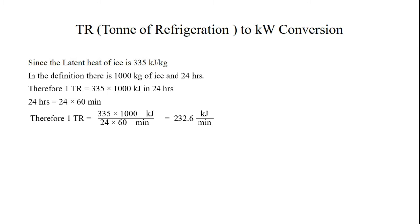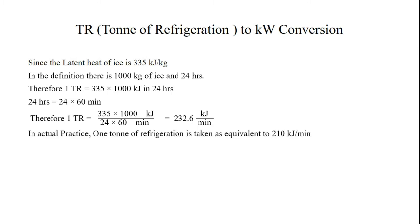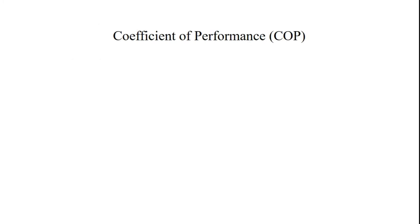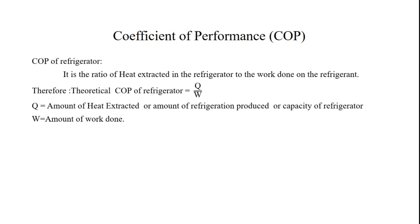This equals 232.6 kJ/min. In actual practice, 1 ton of refrigeration is taken as equivalent to 210 kJ/min. To convert 1 TR to kilowatt, we divide 210 by 60 to get kJ per second (i.e., kilowatt). Therefore, 1 TR = 210 kJ/min = 3.5 kW.